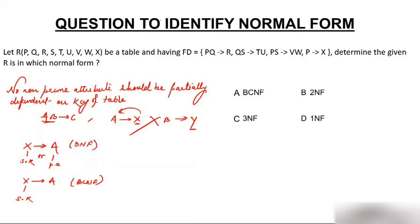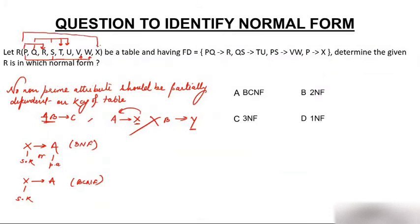To solve the question you need to identify the candidate key of the table. Using the given functional dependencies, let's make an arrow diagram. We have: PQ→R, QS→TU, PS→VW, and P→X.